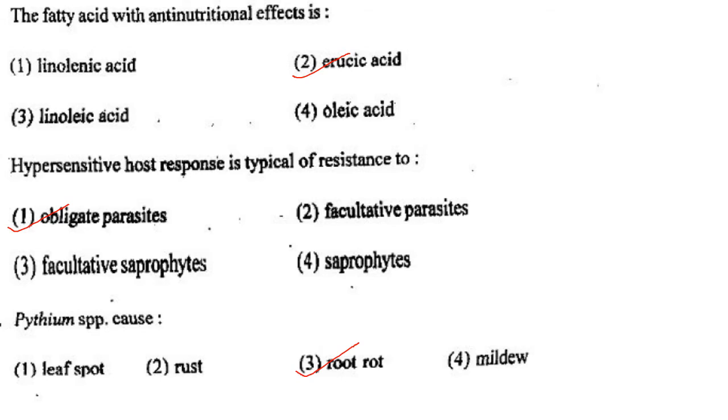Next one: Pythium species cause option 1, leaf spot; option 2, rust; option 3, root rot; option 4, mildew. Answer is option 3: root rot.